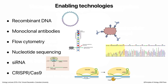No receptor on the cell exists to let viruses in. These proteins or sugars on the cell surface all have other functions; the viruses have adapted to be able to use them. It would be kind of silly to let viruses come in on purpose. These are some enabling technologies: recombinant DNA was one of the first — the ability to clone genes, put them in plasmids, and study them.